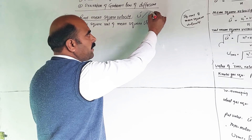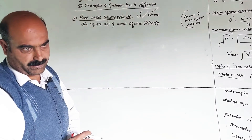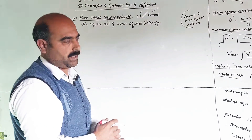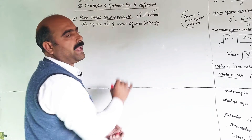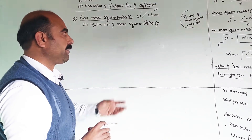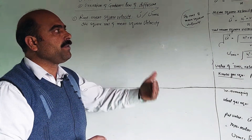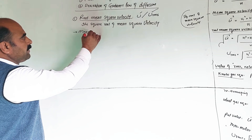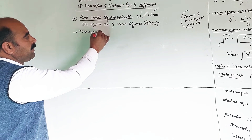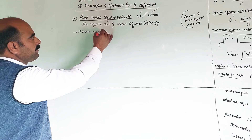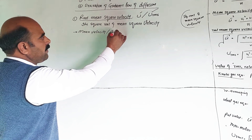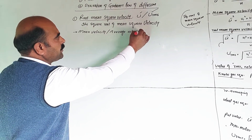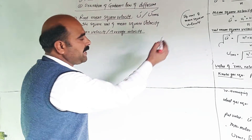Root mean square velocity is also represented by u_rms, where u means velocity. Now, starting from the beginning — the mean velocity, also called the average velocity. We know that the mean velocity of all molecules, or average velocity, refers to the average of all molecular velocities.